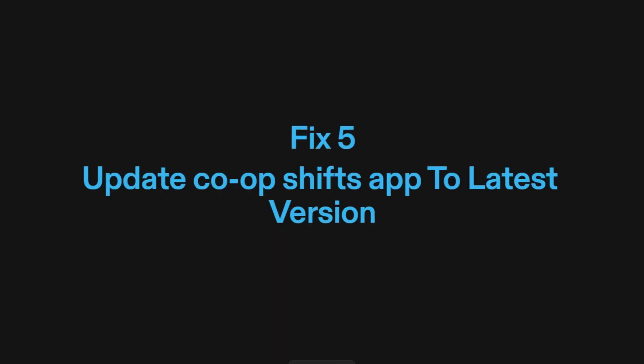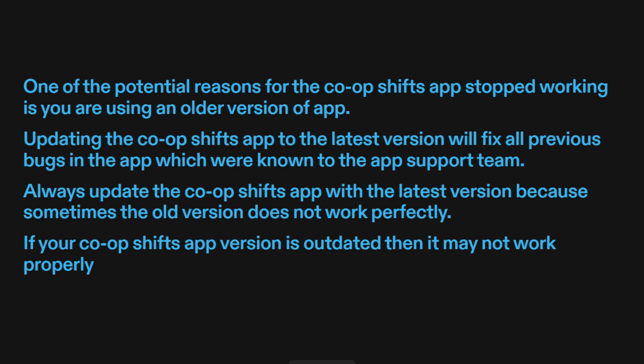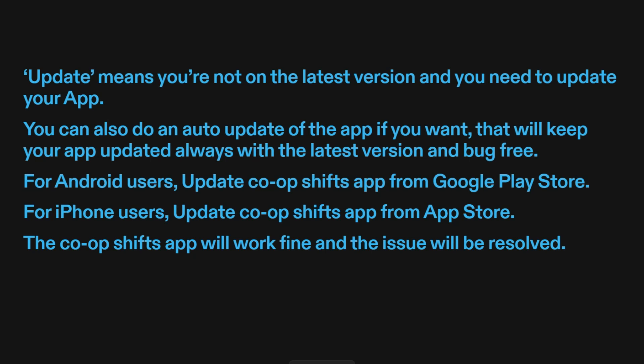Fix five: update Co-OpShift's app to the latest version. One of the potential reasons for the app stopping work is using an older version. Updating to the latest version will fix all previously known bugs. Always keep the app updated because sometimes the old version does not work perfectly. You can also enable auto-update to keep your app always on the latest version and bug-free.